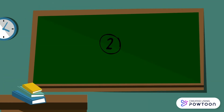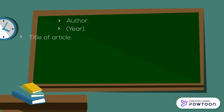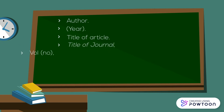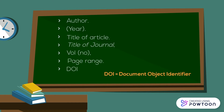Step two is to know what parts of the article are needed. You'll need the author, date, title of the article, title of the journal, volume and issue, page range, and the DOI for the article.